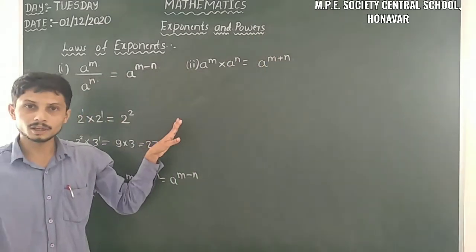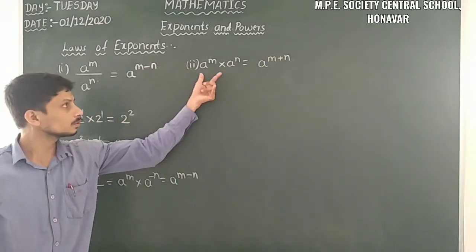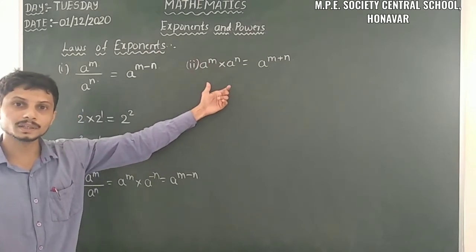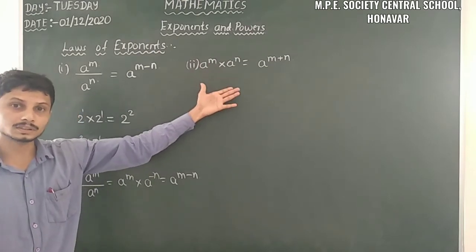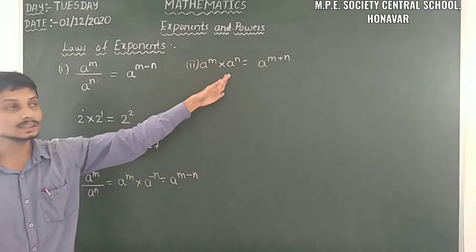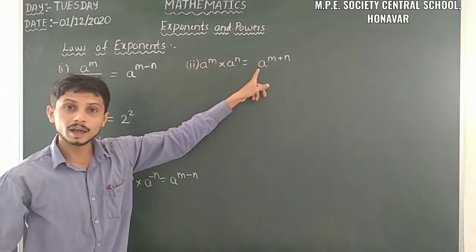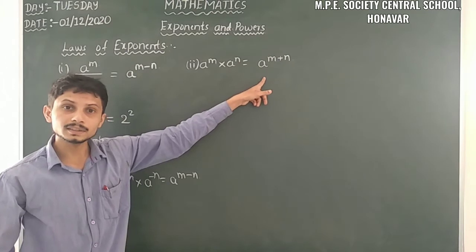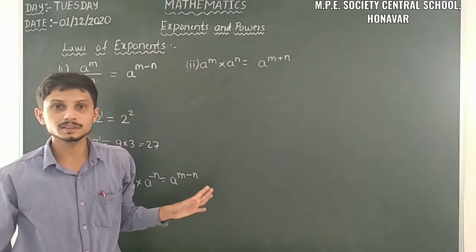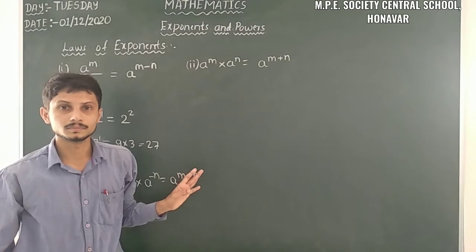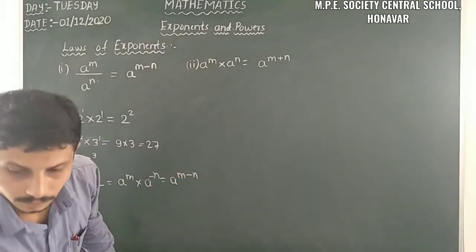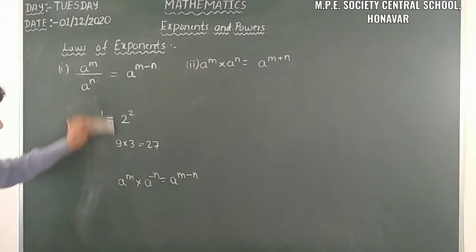So with the same base we can add only the exponents — that is possible. This is the second law of exponents. So let us take the third one.